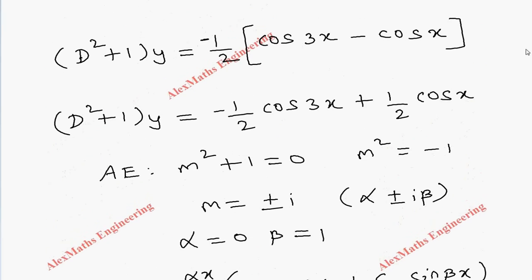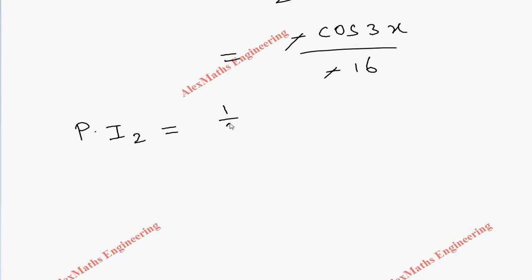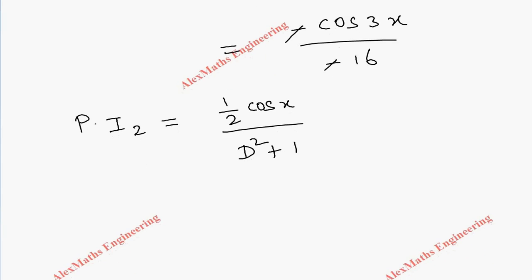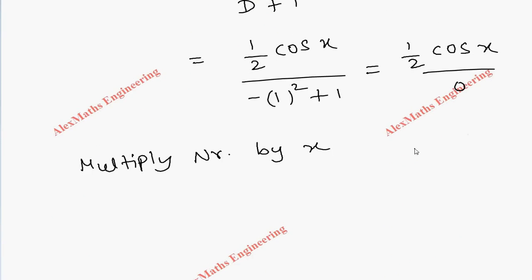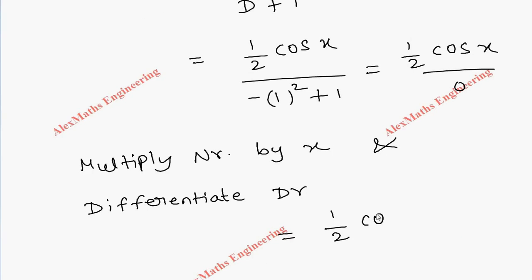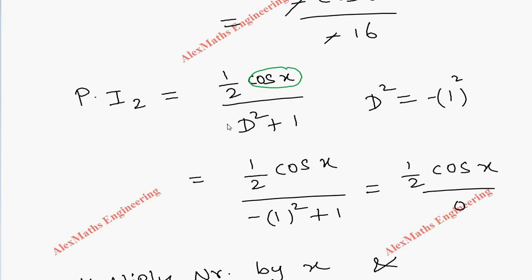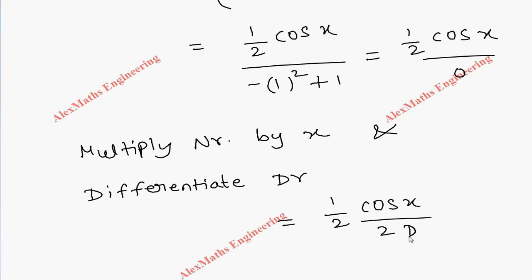For Particular Integral 2, the second term is one-half cos x divided by (D² + 1). The coefficient of x in cos x is 1, so we substitute D² = minus 1². The denominator becomes minus 1 + 1 = 0. When the denominator is 0, we multiply the numerator by x and differentiate the denominator. The differentiation of D² + 1 gives 2D, so we get x times one-half cos x divided by 2D.